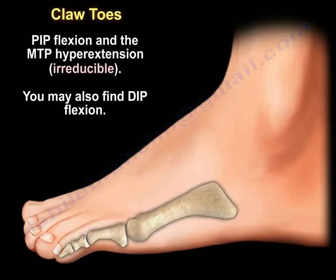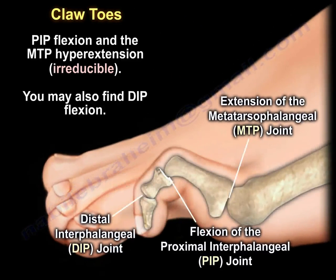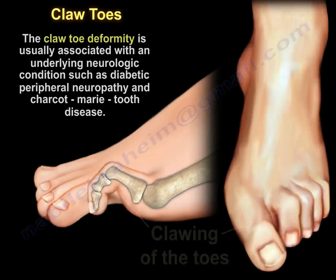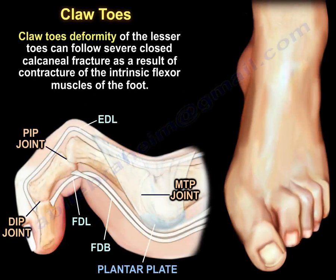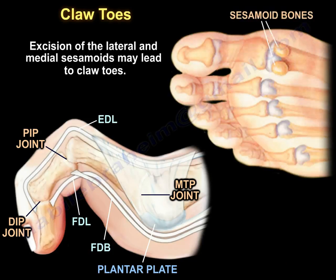Claw toe involves PIP flexion, MTP hyperextension, and is irreducible. You may also find DIP flexion. The claw toe deformity is usually associated with an underlying neurologic condition such as diabetic peripheral neuropathy and Charcot-Marie-Tooth disease. Claw toe deformity of the lesser toes can follow severe closed calcaneal fracture as a result of contracture of the intrinsic flexor muscles of the foot. Excision of the lateral and medial sesamoids may also lead to claw toe.